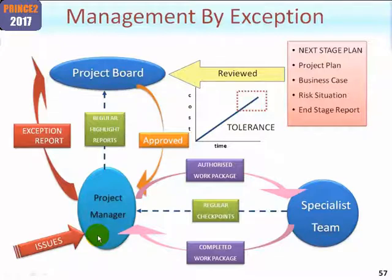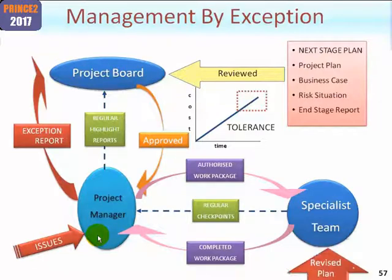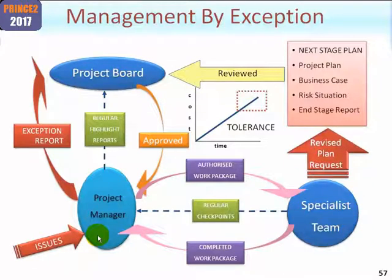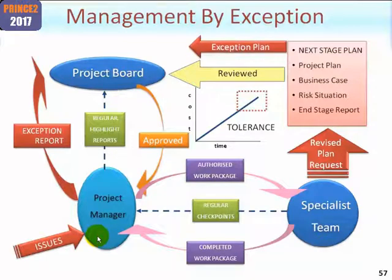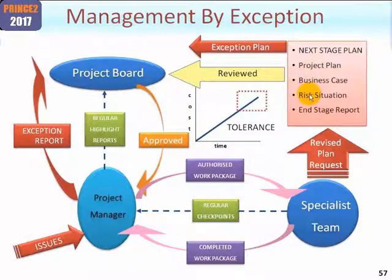The project board need to consider this and decide what to do next. They may decide to prematurely close the project, but let's assume in this case they actually like one of the options and they request a plan from the project manager. The project manager, using the process managing a stage boundary, will prepare not the next stage plan but an exception plan. However, the project manager will still update the project plan, update the business case, risk situation and so on.